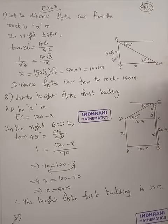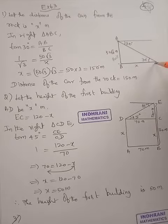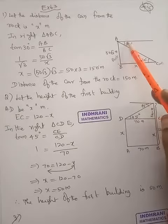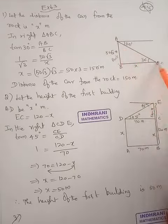When we look at the car, the angle of depression is 30 degrees. When we draw a horizontal line, this is 30 degrees.